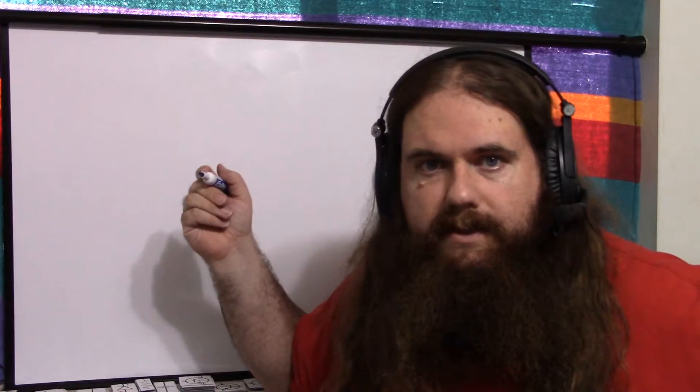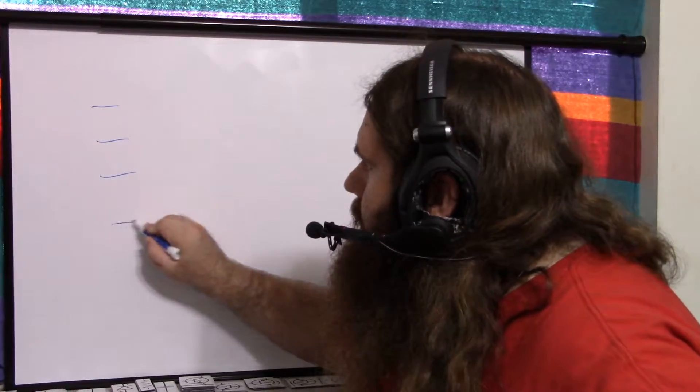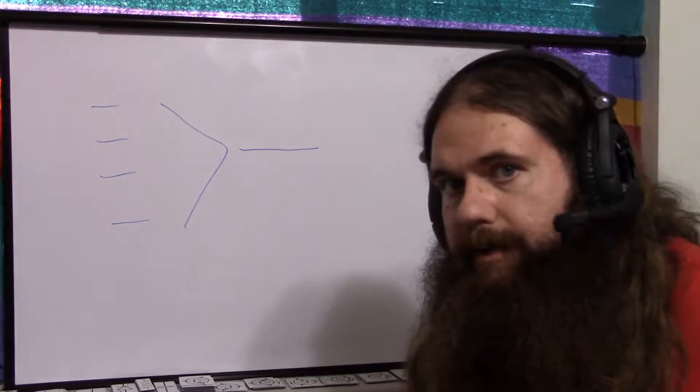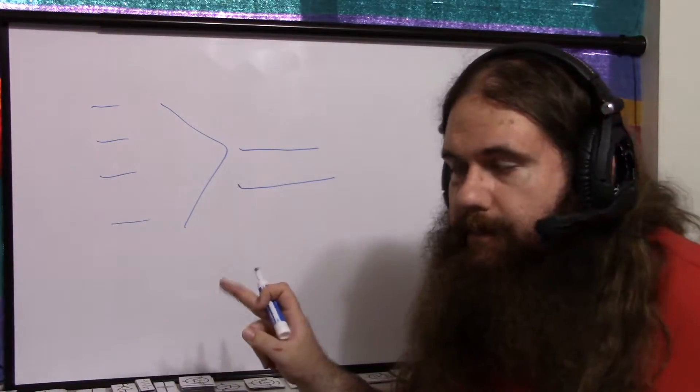A binary encoder is the opposite of a binary decoder. Let's say you have four lines. Each of them can be high or low, and you want to transfer this into one line, or in this case two. So four values can be a two-bit binary number.